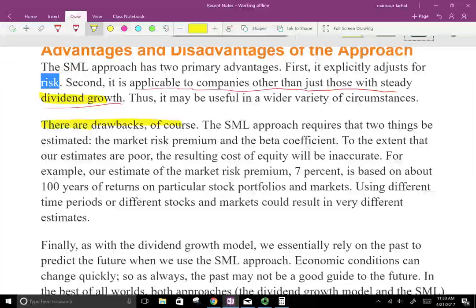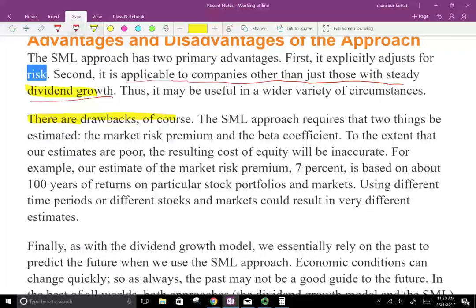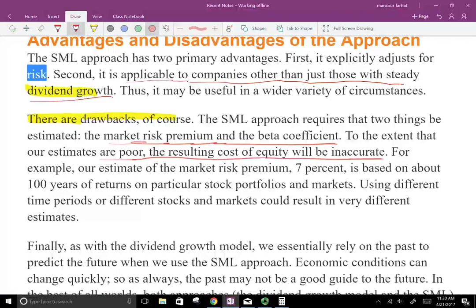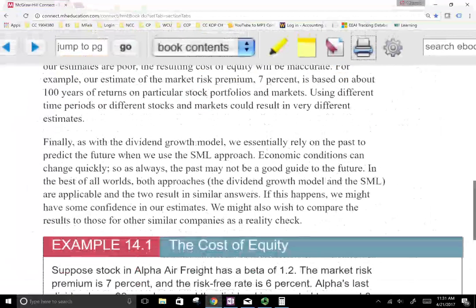Of course, there are drawbacks, disadvantages. Well, once we estimate anything, it's a disadvantage. The market risk premium and the beta coefficients, those are estimates. To the extent that our estimates are poor, the resulting cost of equity will be inaccurate. For example, our estimate for the risk premium is 7%. It's based on about 100 years of returns on a particular stock portfolio and market. It was about 88 years, to be more specific. So using a different time period, you'll get a different risk premium. So it's an estimate. And once you're dealing with estimate, you're dealing with the unknown.